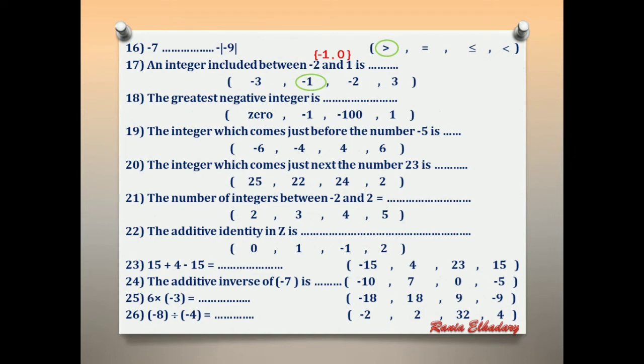Number 18: the greatest negative integer. The greatest negative integer is negative 1, because it is closest to 0.